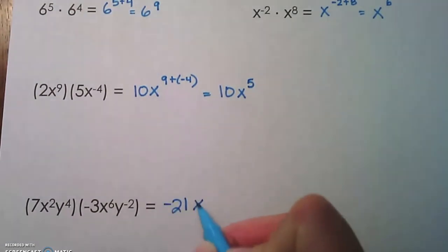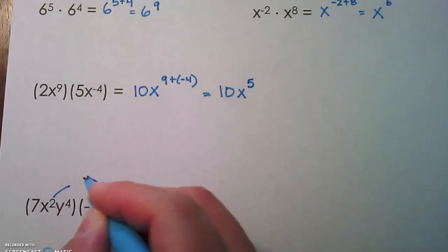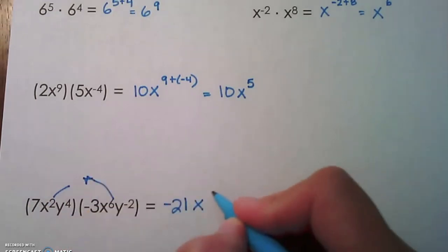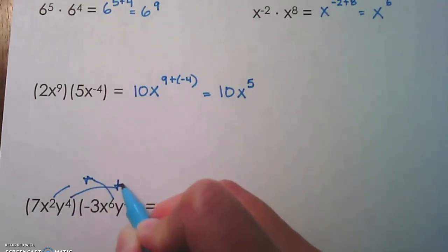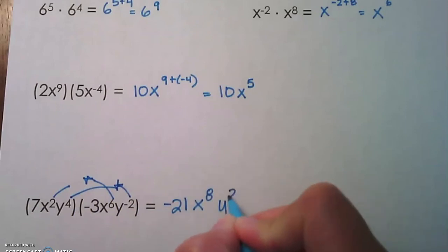And then our x's, we're going to add the exponents. The 2 and the 6 are going to get added together. That gives us x to the 8th. Then our y's are like bases, so we would add the exponents on the y's together. 4 plus negative 2 is y squared.